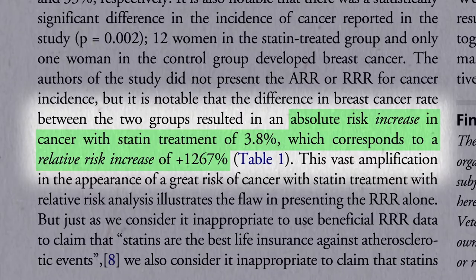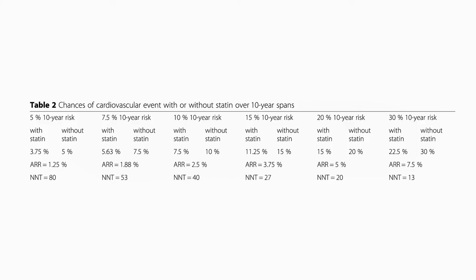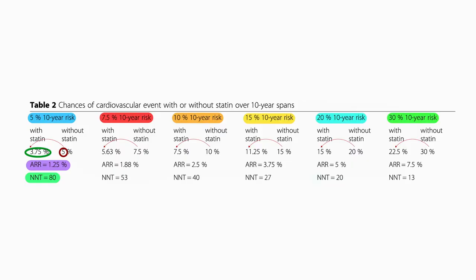Ideally, you'd use both the relative risk reduction and absolute risk reduction stats. When you compile a bunch of statin trials together, the relative risk reduction is about 25%. So, if your 10-year risk of a heart attack or stroke is 5%, taking a statin would take that down from 5% to 3.75% — an absolute risk reduction of 1.25%, or a number needed to treat of 80, meaning roughly a 1 in 80 chance you'd avoid a heart attack or stroke over the next 10 years. As your baseline risk gets higher, even with that same 25% relative risk reduction, your absolute risk reduction gets bigger. By a 20% baseline risk, you have a 1 in 20 chance of avoiding a heart attack or stroke over the subsequent decade if you take the drug.